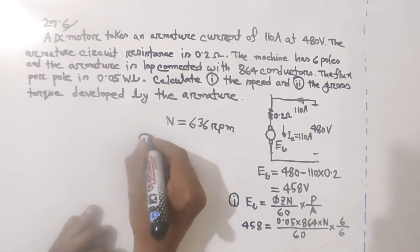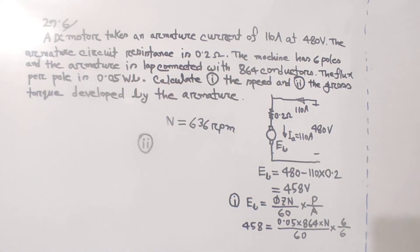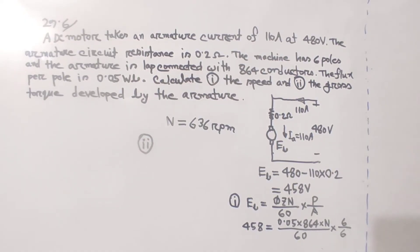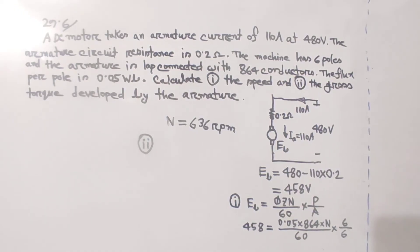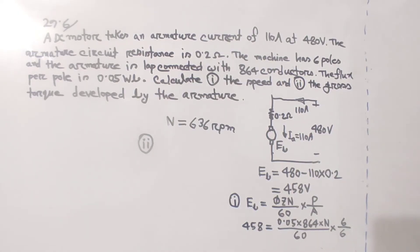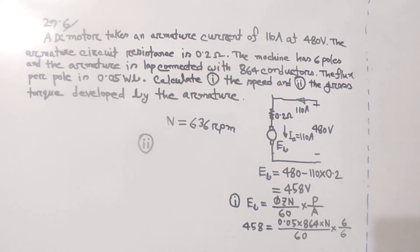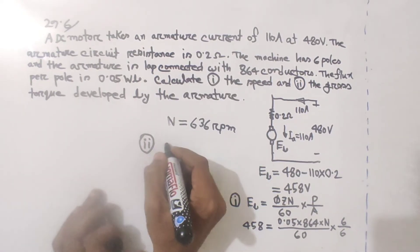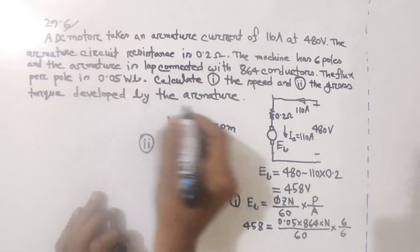Now for the gross torque developed by the armature, we use the torque formula. The armature torque formula is derived from armature power.